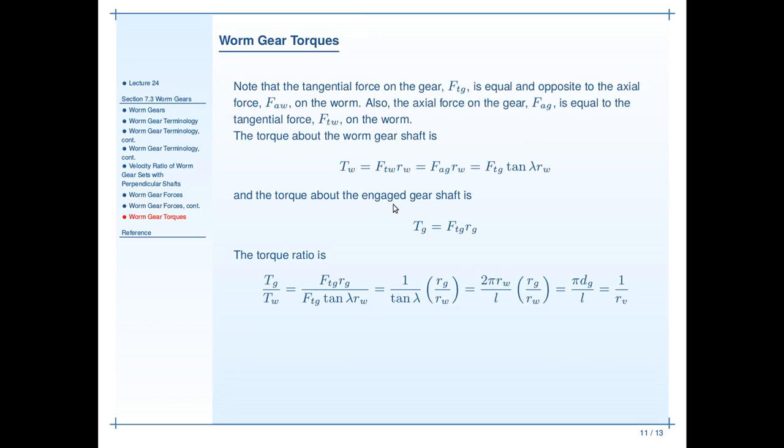Torques are very easy to compute. Again, we just take the relevant tangential force multiplied by the pitch radius. And that would go for both the worm and the gear.